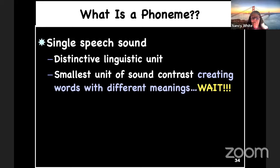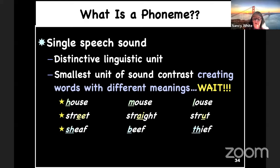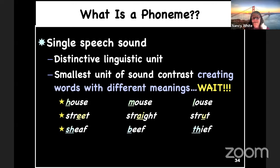Now listen to the next set: street — straight — strut. What changed in those three words? The medial vowel sound. Next: sheath — beef — thief. What's different? The initial consonant sound again. The spelling of the vowel phonemes are different, but that has nothing to do with what we're talking about — we're talking about the speech sounds, the phonemes. What changed phonemically is only the initial consonant sound. One more: street — stream — streak. What's different in those three? The final consonant phoneme.